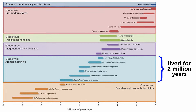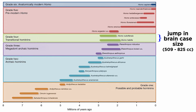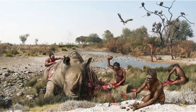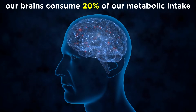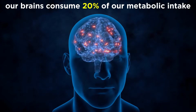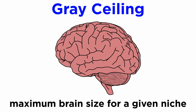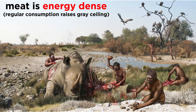Australopiths lived for nearly 2 million years, Paranthropus even longer than that, and yet neither saw a large jump in brain case size like what we have seen in just 800,000 years of genus Homo — from 509 to 825 cubic centimeters across the two Homo species discussed. Currently, the thinking is that this increase had something to do with the acquisition and consumption of meat. Our brains consume 20% of our daily metabolic intake — brains are profoundly energy expensive, which is why animals tend to hit a gray ceiling, a maximum brain size for a given niche. However, meat is energy dense, meaning regular incorporation of meat raises the gray ceiling of the population.